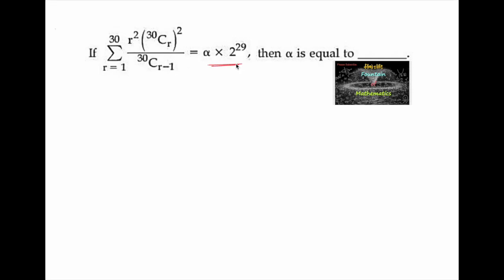Given that summation r = 1 to 30 of r² · C(30,r)² / C(30,r-1) is equal to α · 2²⁹, we need to find the value of α. This can also be written by considering the left hand side and simplifying it.